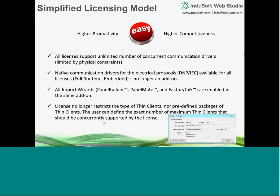Previously thin clients had to be purchased in multiples of two: 2, 4, 8, 16, 32, up to 128. That caused some users grief. Now you can define the exact number of thin clients you want — if you need 33, you can purchase exactly 33 instead of having to jump to 64. There was also a question about whether you can have different versions of development installed on the same machine — yes you can. Here I have version 7.1, 8.0, and 8.1 all installed on the same machine. No known issues with that — we actually encourage it.